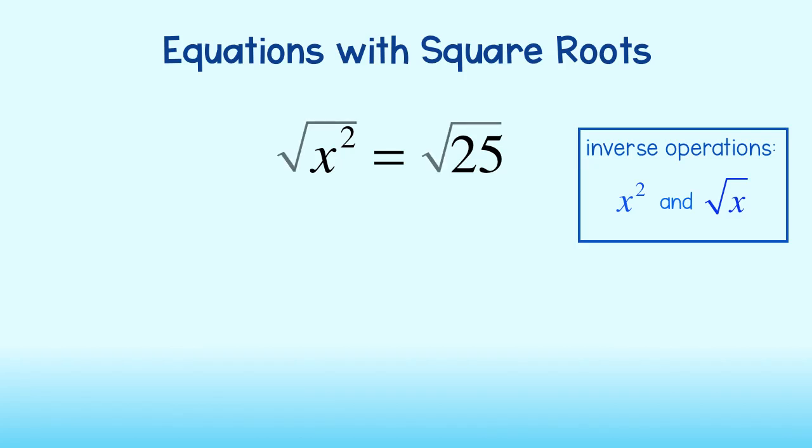Taking the square root of both sides, we'll undo the square and leave us with just x on the left-hand side. The square root of 25 is equal to positive and negative 5.